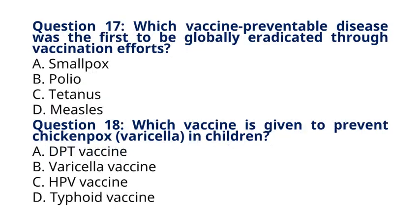Question 17. Which vaccine-preventable disease was the first to be globally eradicated through vaccination efforts? A. Smallpox. B. Polio. C. Tetanus. D. Measles. The correct answer to question 17 is option A, smallpox. Smallpox is the first and only disease to be globally eradicated through vaccination efforts, with the last natural case reported in 1977.